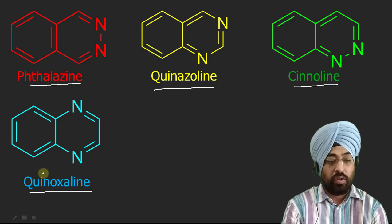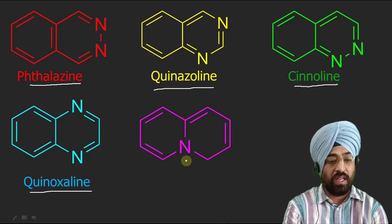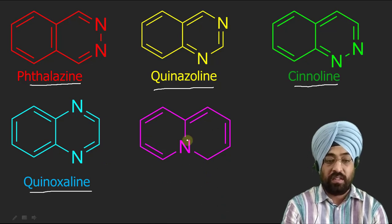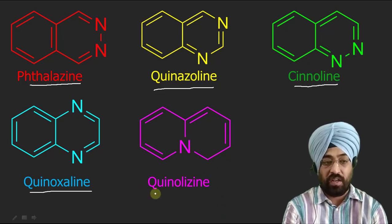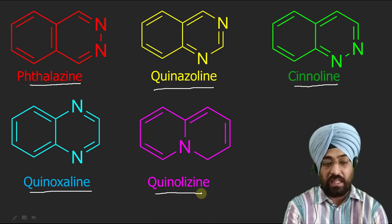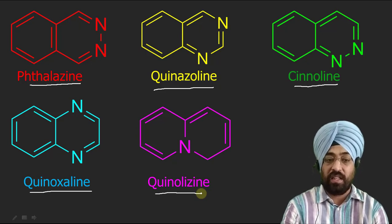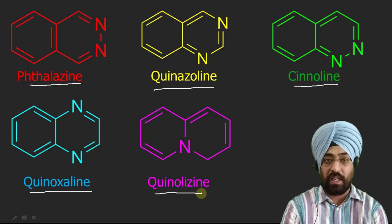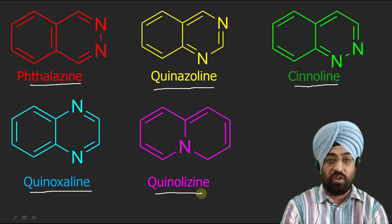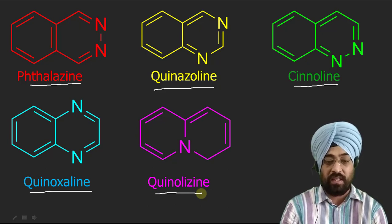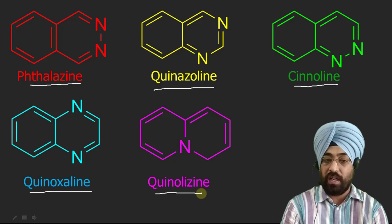This compound is called quinazoline. This compound, in which nitrogen is shared between the two rings, is quinolizine. Its name is quinolizine. As I have said, there is no logic behind why it is quinolizine — it is its trivial name, but we have to remember these names because these are important compounds with pharmaceutical and many other applications. Heterocyclic chemistry is a very wide subject.